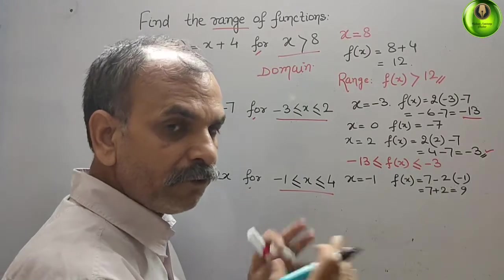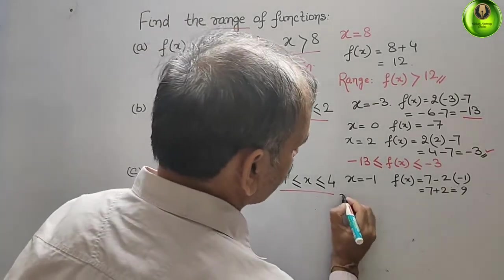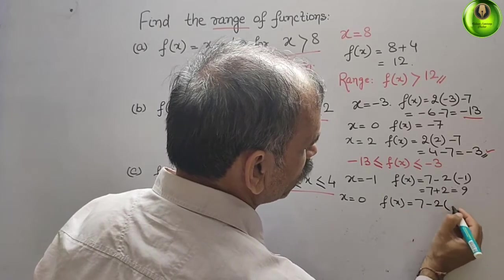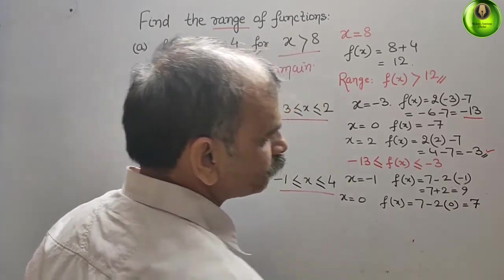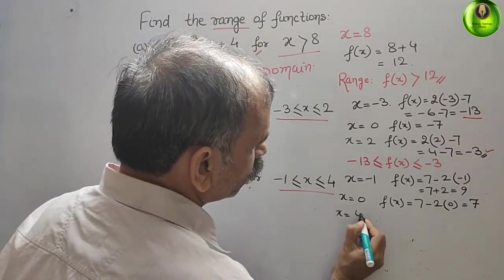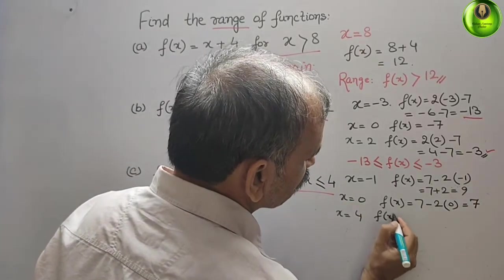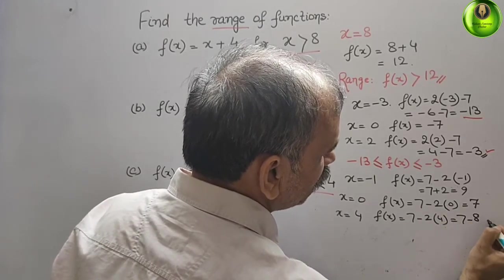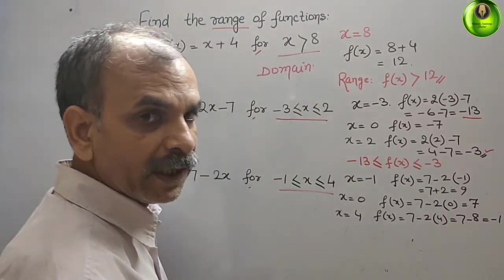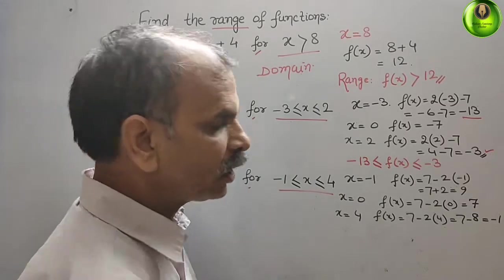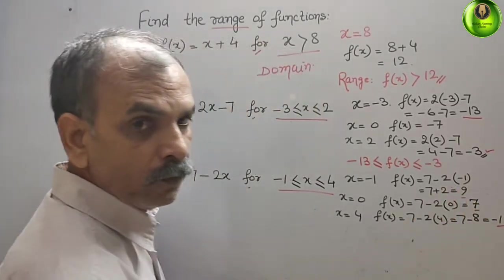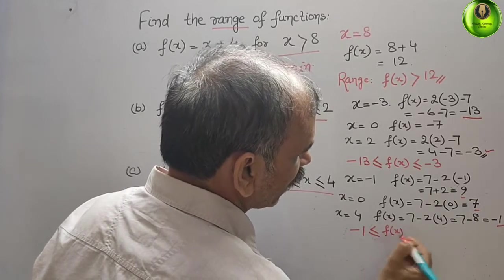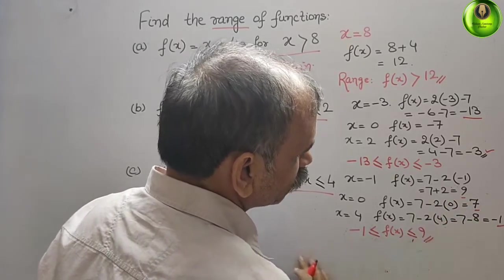We take an in-between value, x = 0. So f(x) = 7 - 2(0), that is equal to 7. Next, we take x = 4. So f(x) = 7 - 2(4) = 7 - 8, which equals -1. We have three values. The minimum is -1 and the maximum is 9, so the range is -1 ≤ f(x) ≤ 9.